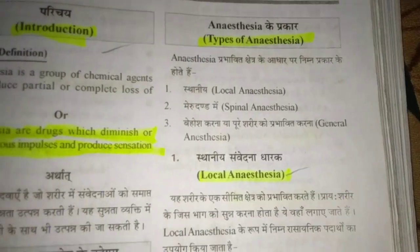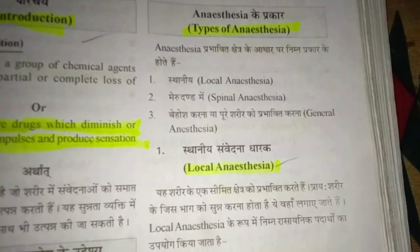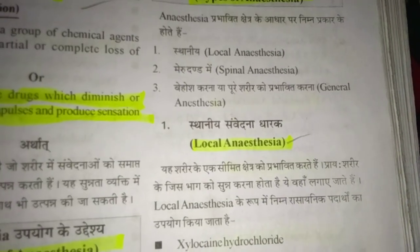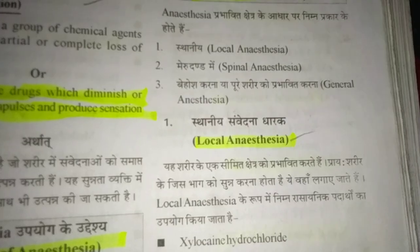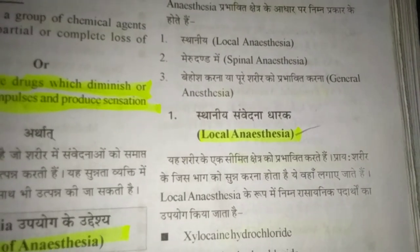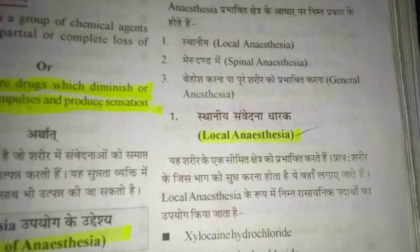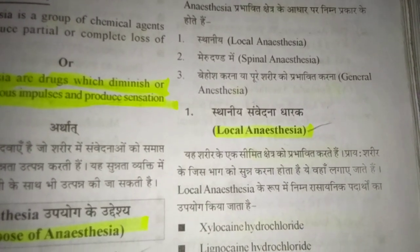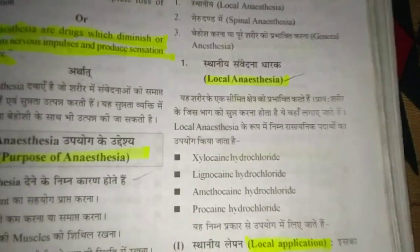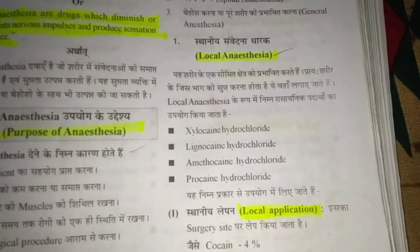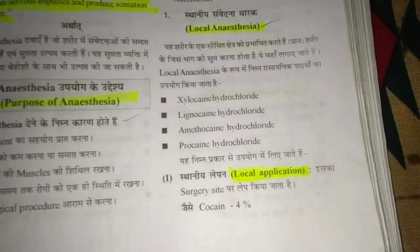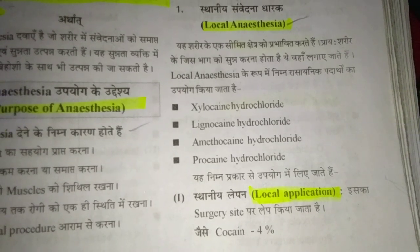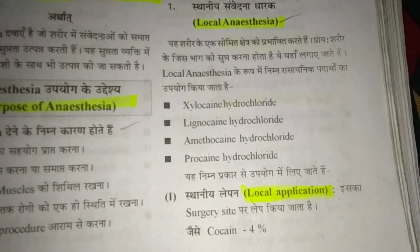Types of anesthesia: Anesthesia को प्रभावित क्षेत्र के आधार पर निम्न प्रकारों में वर्गीकृत किया जाता है: local anesthesia, spinal anesthesia, general anesthesia, sedative anesthesia, and topical anesthesia.